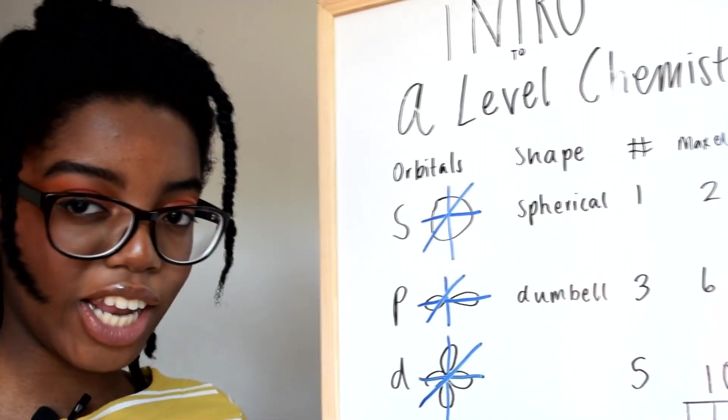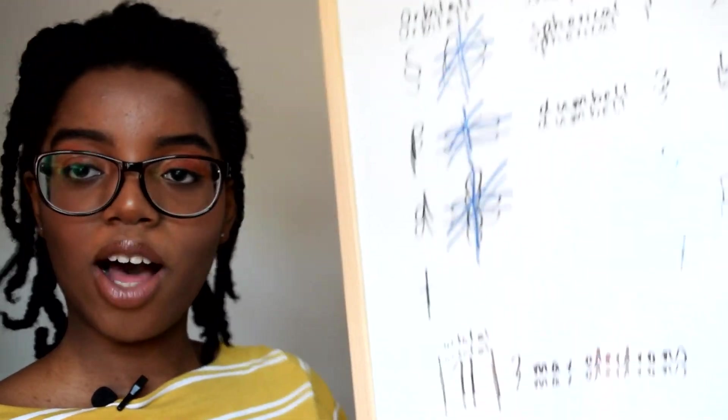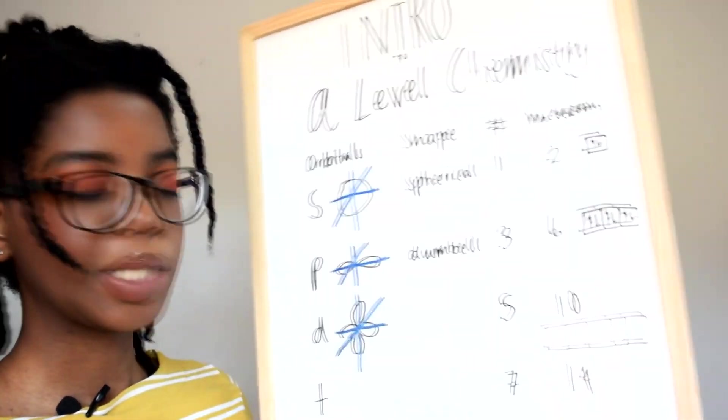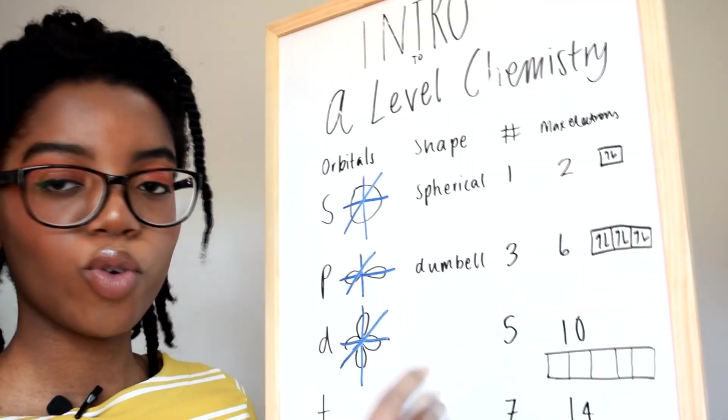How you draw the electrons as electron structure is with boxes. When you insert the electrons, you actually draw one electron in each box first before you pair them up.